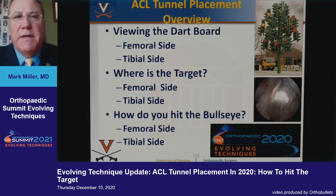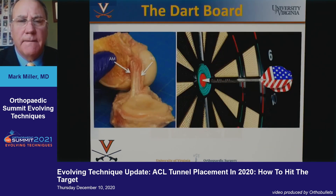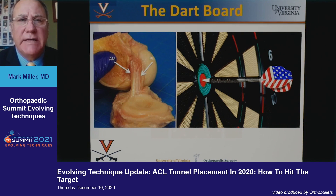In order to figure this out, we need to think about this as like a dartboard. We need to see the dartboard on both sides. We need to figure out where the target is, and then we need to figure out how to hit the bullseye. The dartboard consists of the normal anatomy of the ACL. We want to get the graft in the center between the two bundles. We should be all familiar with this anatomy.